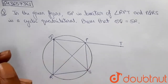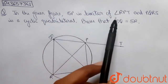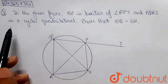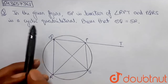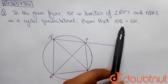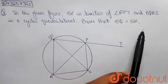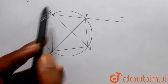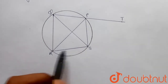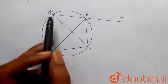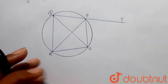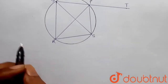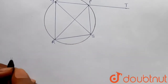It says that in the given figure, SP is the bisector of angle RPT and PQRS is a cyclic quadrilateral. We have to prove that SQ is equal to SR. Here's the figure, and with the help of this figure we have to prove that SQ is equal to SR. Let's start.